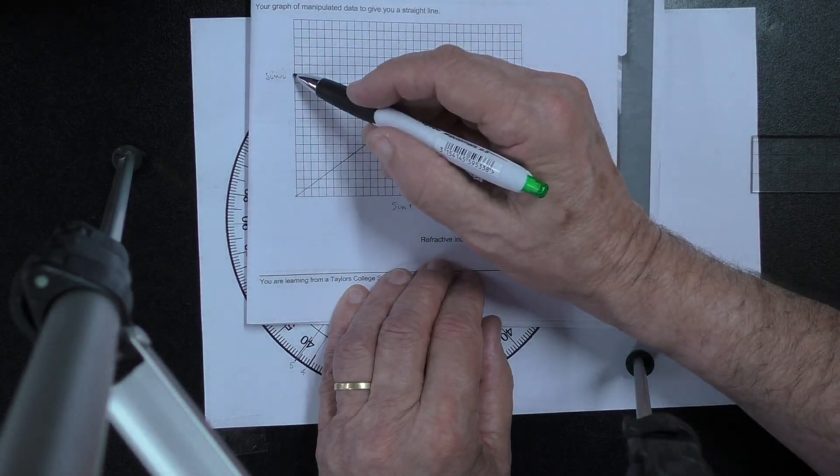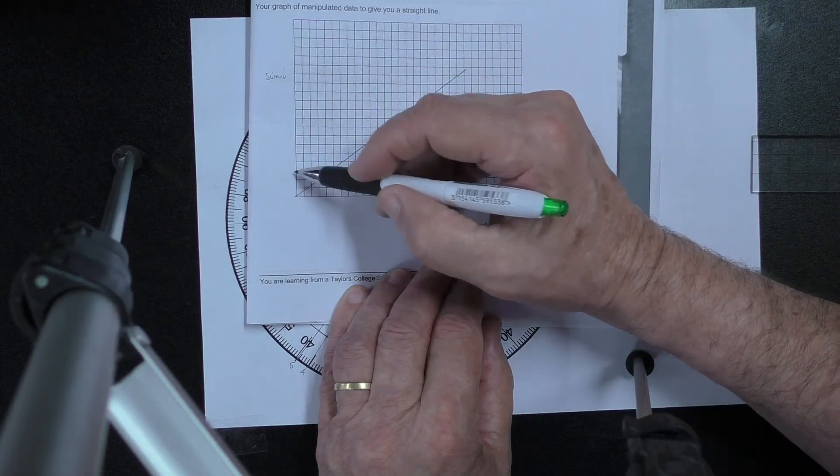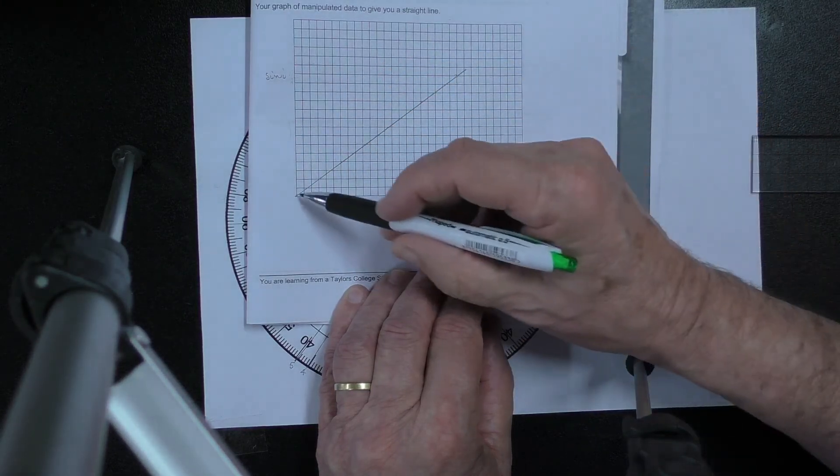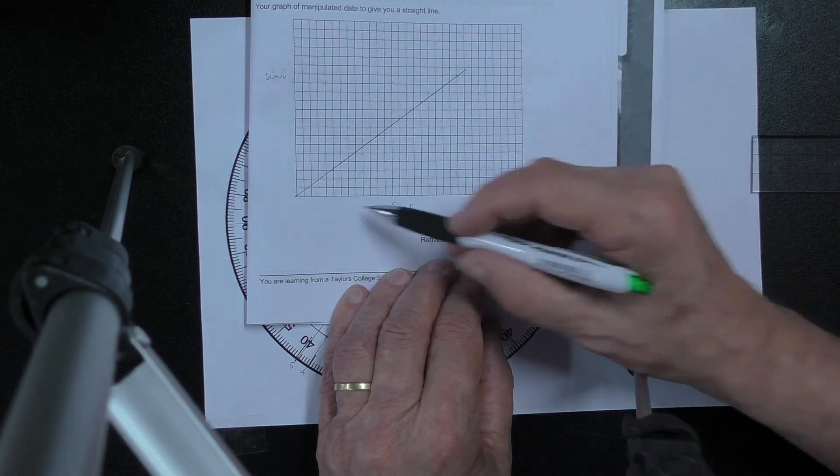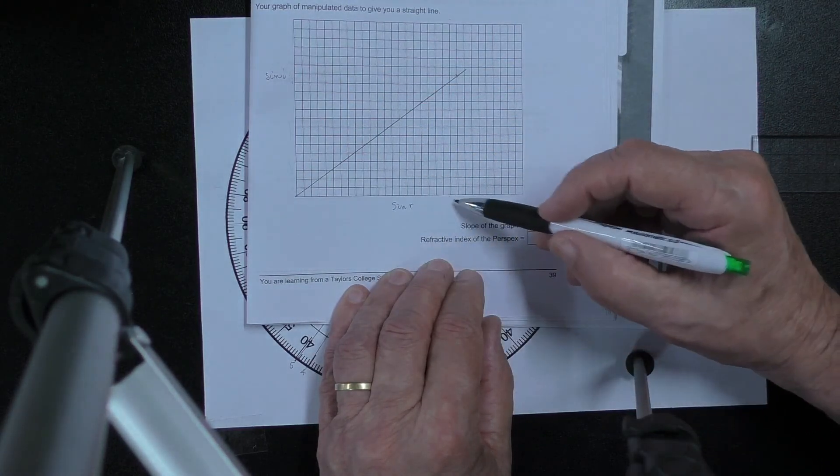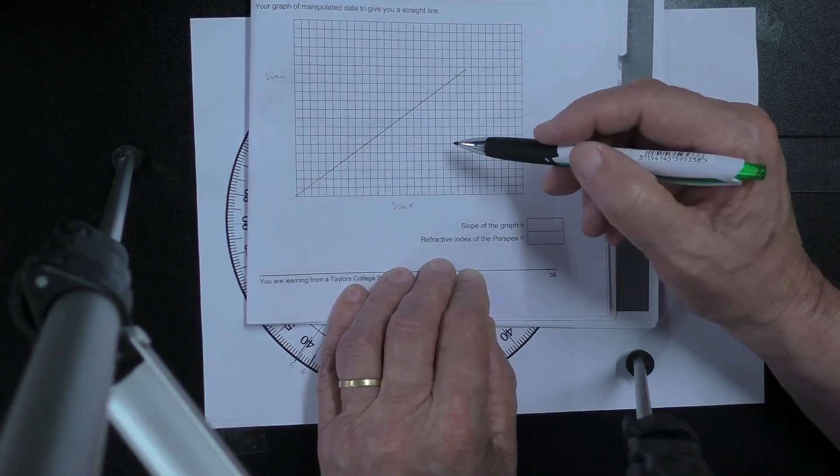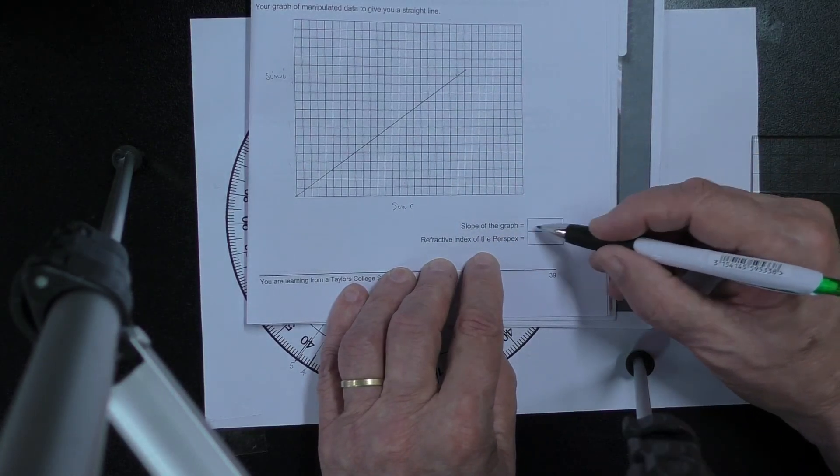Perhaps a point like that, so then I can measure the rise. This one here, that's the rise over the run. In effect I'm getting the tangent or the slope. Well it's not really the tangent, but it's the slope of that line. And that's what I would write here.